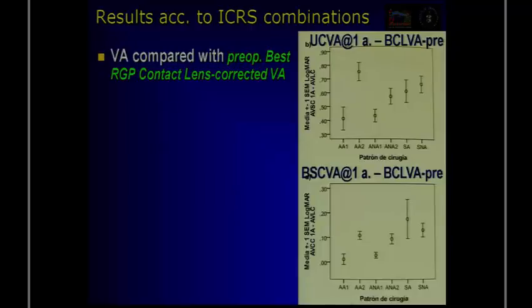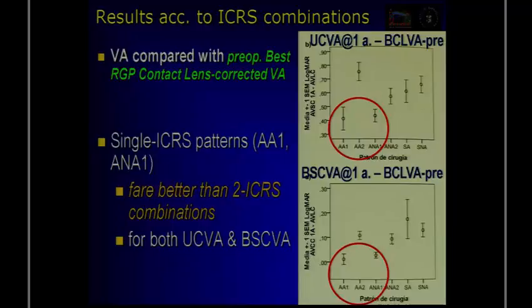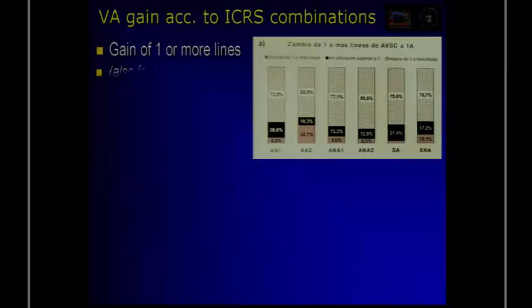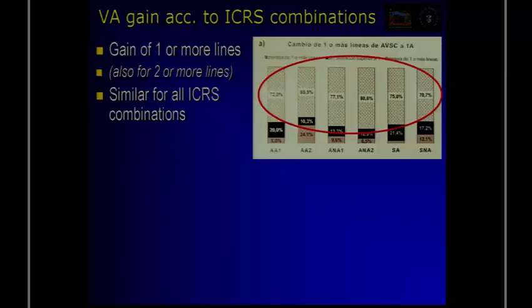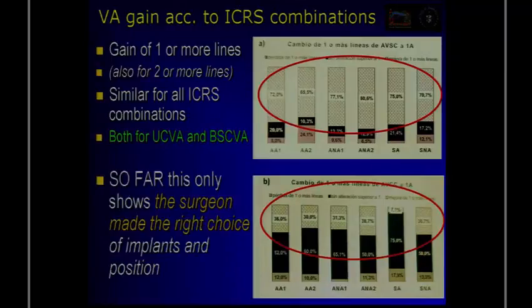Another analysis concerns ICRS combinations, and this is very interesting. Single ICRS have better results — they perform better than two-ICRS combinations for both uncorrected and best corrected visual acuity. There is a gain of one or more lines, similar for all ICRS combinations, both for uncorrected and best corrected visual acuity at one year. This shows that the surgeon was right in choosing the implants.